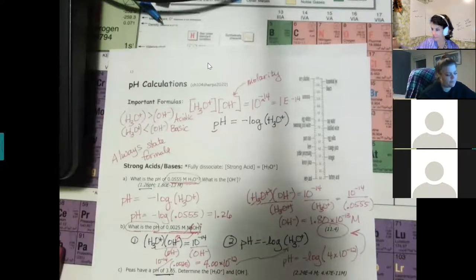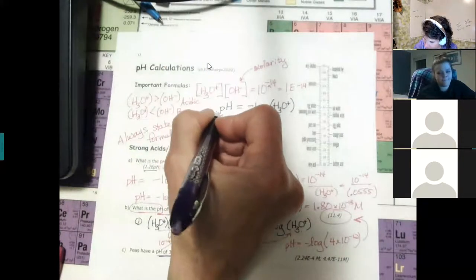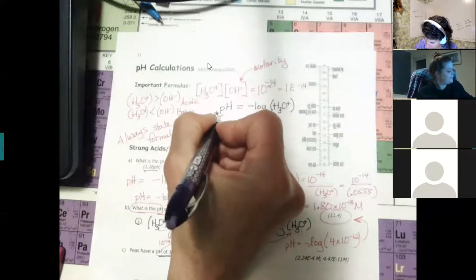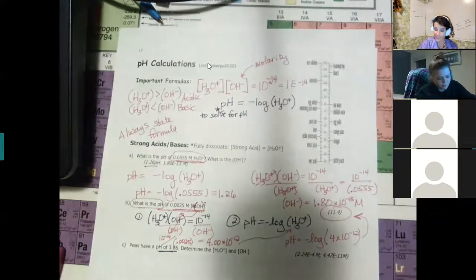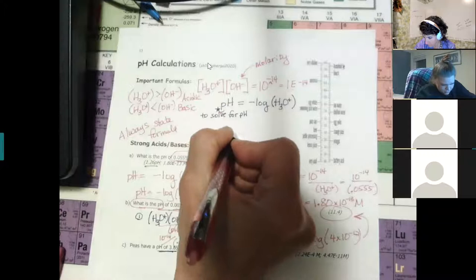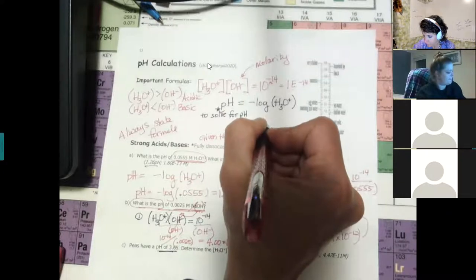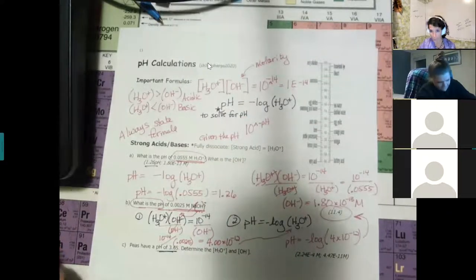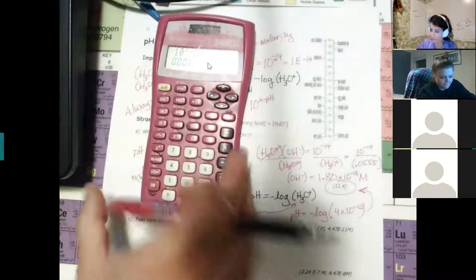These questions give you the pH and ask you to go backwards. We need one more formula. The purple formula solves for pH from hydronium; this new formula is for when you're given the pH: [H₃O⁺] = 10^(−pH). The caret symbol on your calculator: enter 10^(−3.65).